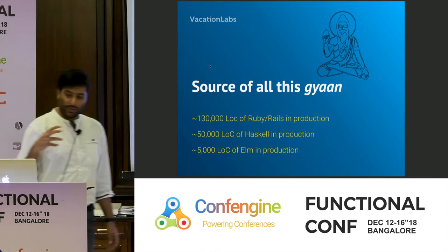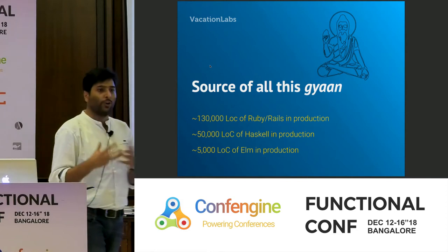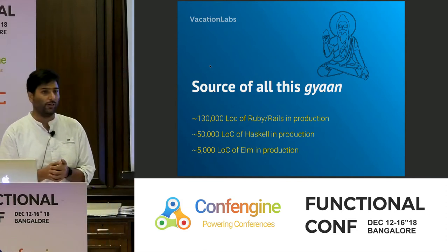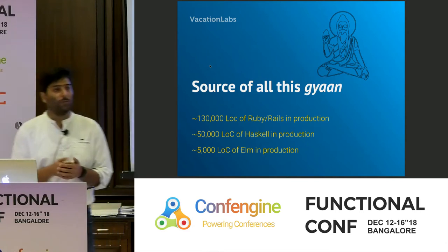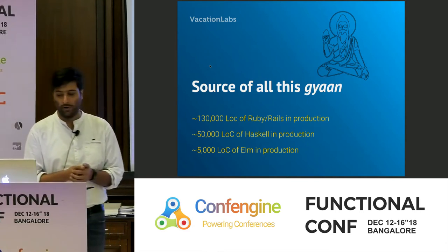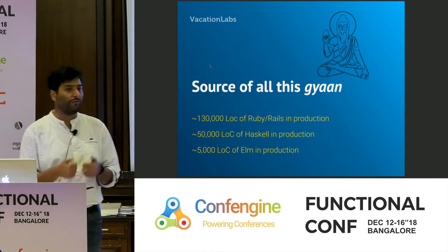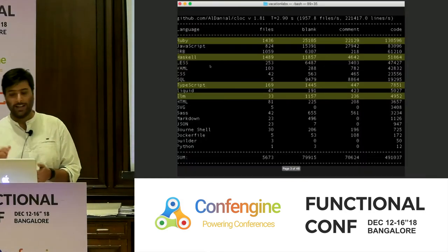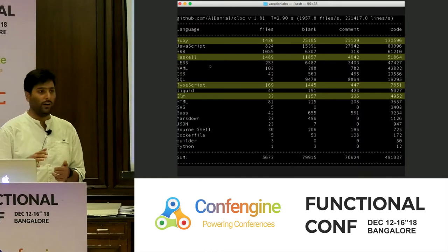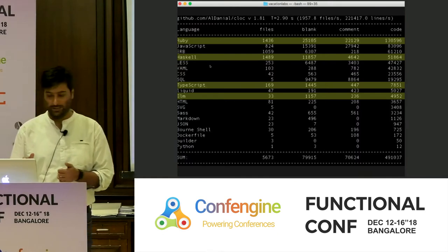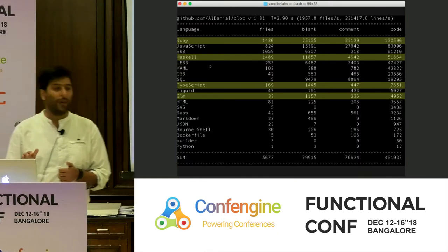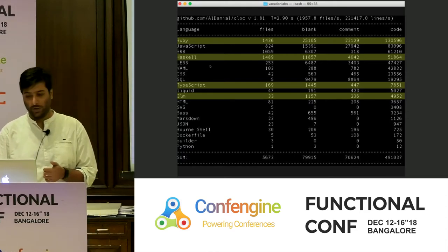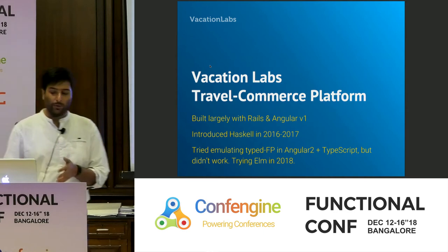Let me tell you where all of this is coming from. We have written about 130,000 lines of Ruby code, 50,000 lines of Haskell code in production, and now we also have 5,000 lines of Elm code in production. That's the actual CLOC output — you can see Ruby, Haskell, Elm, and also TypeScript highlighted there. I'll get to why TypeScript is highlighted in a moment. So what are we building with all of this?